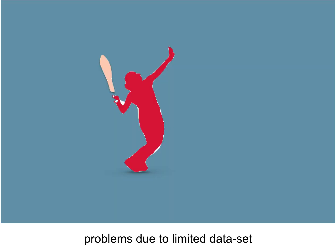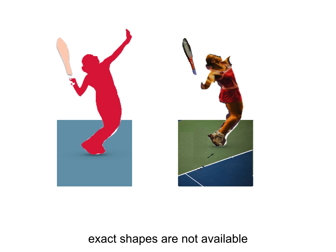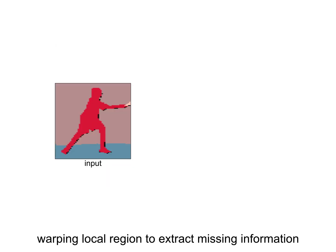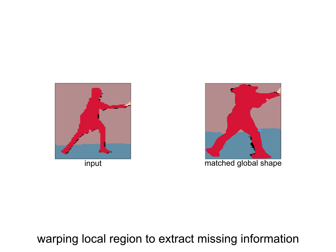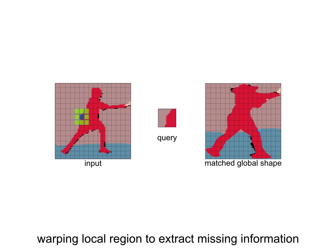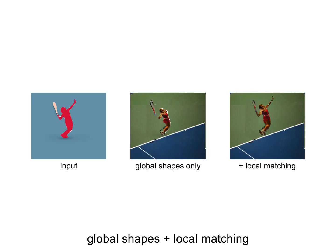The simple shape-based matching will, however, fail if we do not find an exact match. We studied this problem closely. Given an input shape on the left, the matched global shape is on the right. We see that relevant information is available, but strict matching does not allow us to capture it. We need to relax strict shape matching and enable local warping. To do so, we match local parts, which are 16x16 regions with context shown in green. For each part, we search for an optimal correlation-based match with a larger region in the exemplar image, shown in yellow. This simple local matching enables us to generate complete outputs now.